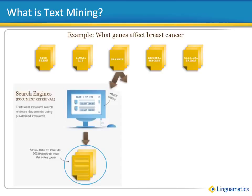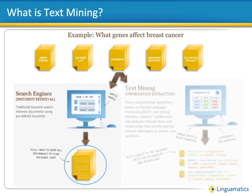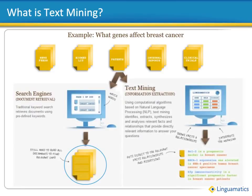In the text mining approach, the question can be expressed in an open way. I2E uses built-in vocabularies to expand out all the different ways genes and diseases can be expressed in the literature. It automatically extracts out the concepts — in this case genes and breast cancer — and finds the relationship between them using its natural language processing engine. The results are presented as a set of facts, relationships and assertions, with links to the original document for when additional context is required. This approach makes it much faster and much more efficient to analyse the results and get to the right answers.